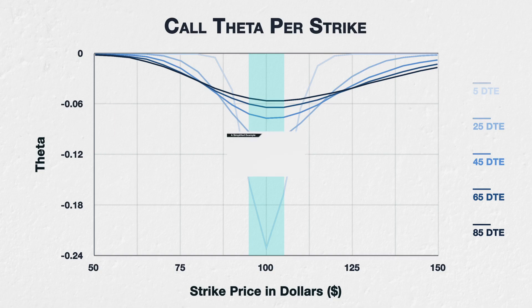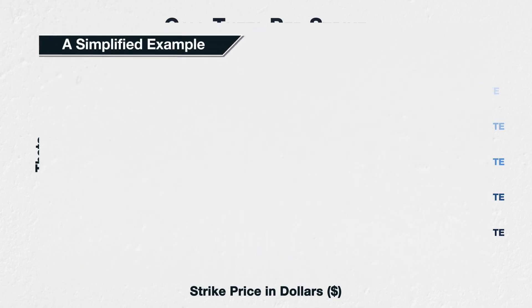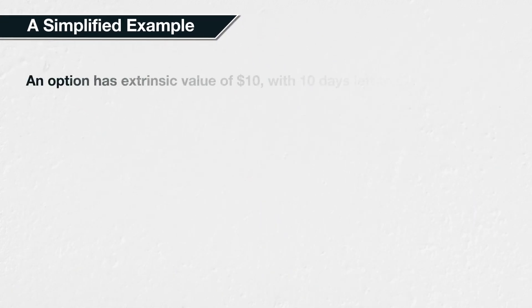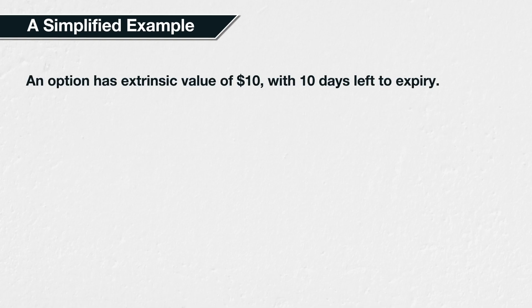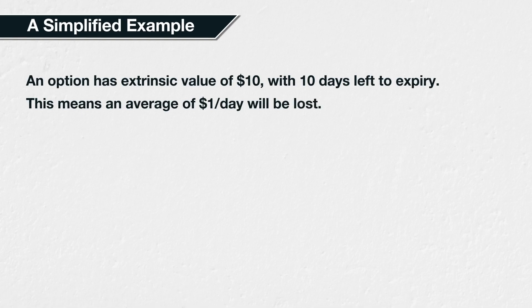To use a similar simplified example, imagine again that an option has a value of $10 and 10 days left to expiry. We could say that this option is going to lose an average of $1 a day for the next 10 days, so we can think of this $1 a day figure as our simplified average version of theta.